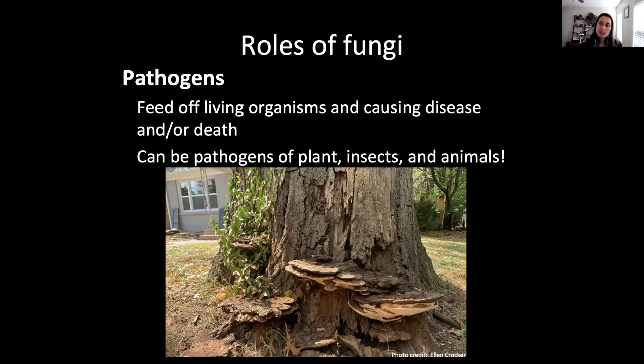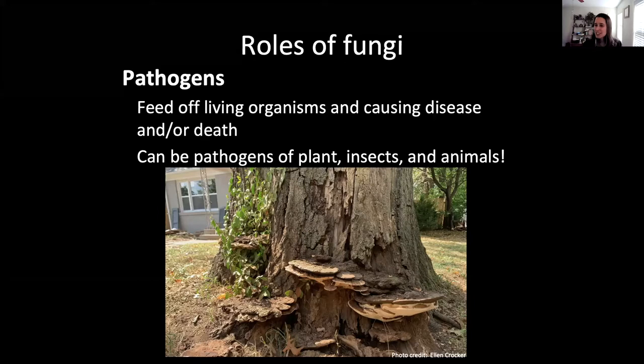Knowing which fungus it is will tell you whether it's something really aggressive that will progress rapidly, or whether it's just taking advantage of a pocket of dead heartwood without significantly affecting the tree's health. I also have a cracked cap polypore, Phellinus robiniae, which grows on black locust almost exclusively — it's hard to find a black locust without one. It causes some damage and structural issues, but I don't think of it as a really aggressive pathogen the way I might Ganoderma root rot.